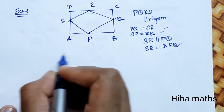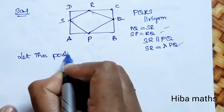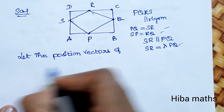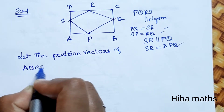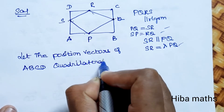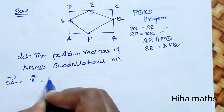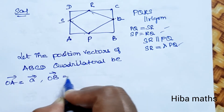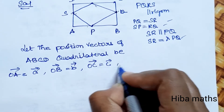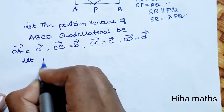Solution: we will give the diagram. Now, position vectors. Let the position vectors of A, B, C, D of the quadrilateral be: OA = a vector, OB = b vector, OC = c vector, OD = d vector. And let P, Q, R and S be the midpoints.